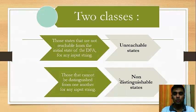This is divided into two classes: unreachable states and non-distinguishable states. What are unreachable states? Those states that are not reachable from the initial state of the DFA for any input string are called unreachable states. Whereas, those states that cannot be distinguished from one another for any input string are non-distinguishable states.